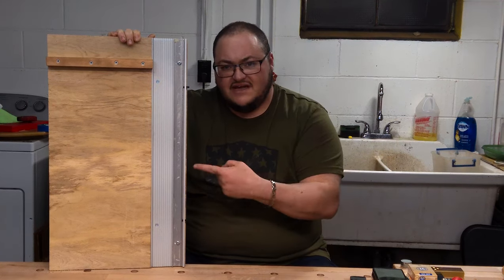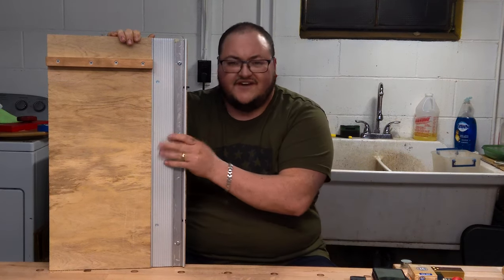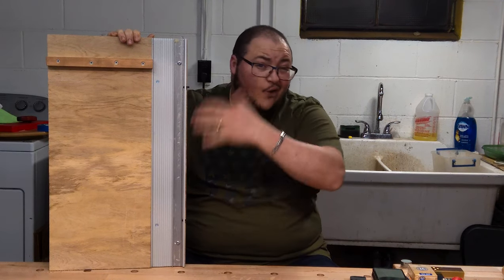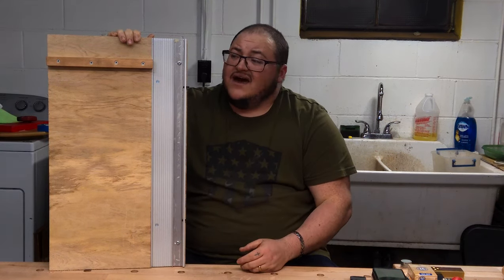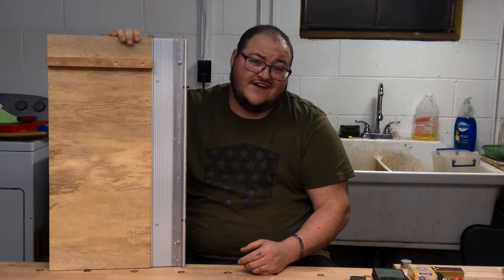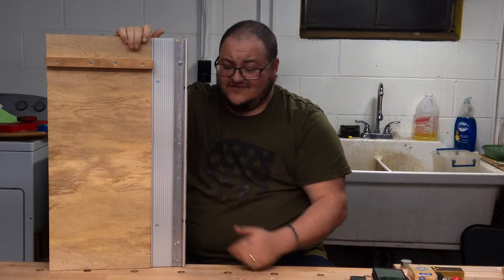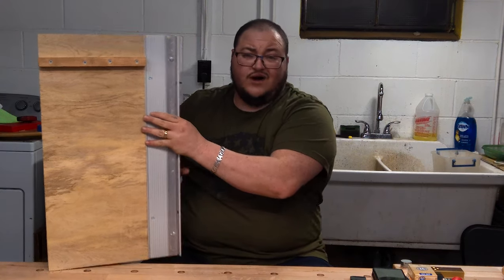In this video, I'm going to be showing you guys how to make this simple shooting board using the Veritas shooting board track. I got the track because I've had the whole board before and I liked it, but I don't like the Veritas fence only because it's super expensive and I really only use two angles, 90 degrees and 45 degrees. So all I wanted was the track.